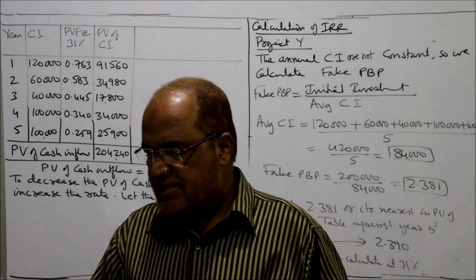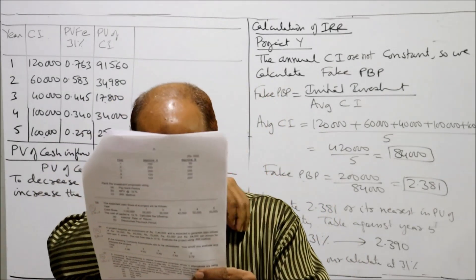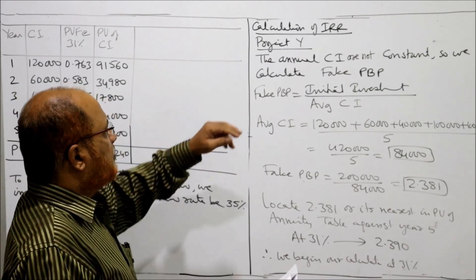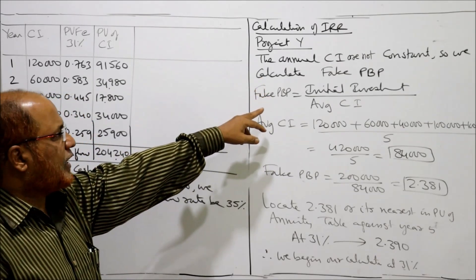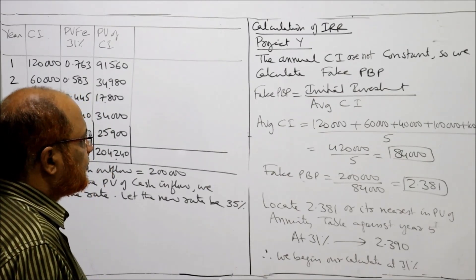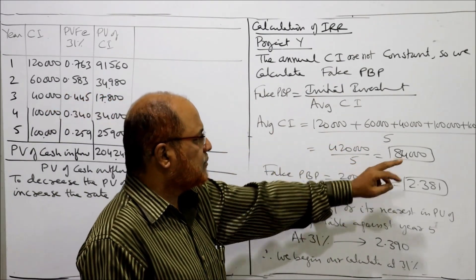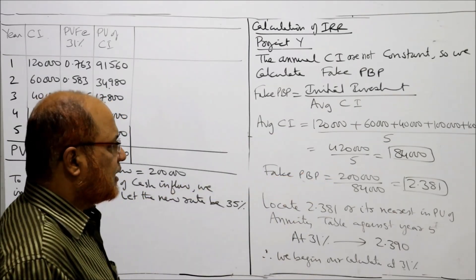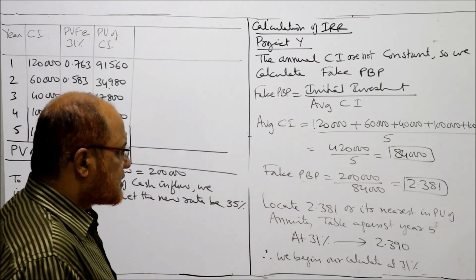We were doing problem number 27. Project X IRR has already been calculated. Now for project Y, we are calculating IRR. Since project Y annual cash inflows are not constant, we calculate the fake payback period. Fake PBP equals initial investment divided by average cash inflow. Initial investment is given as two lakh rupees, and average cash inflow is eighty-four thousand. So fake PBP equals two lakh divided by eighty-four thousand, which is 2.381. We look for 2.381 or its nearest value in the PV of annuity table.